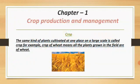The same kind of plants cultivated at one place on a large scale is called a Crop. These are the plants of the same kind which are grown at one place on a large scale. For example, a crop of wheat means all the plants grown in the field are of wheat. In this picture, you can see the crop of wheat and all the plants present here are of wheat.